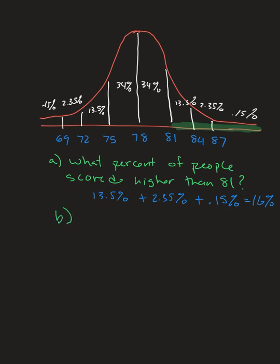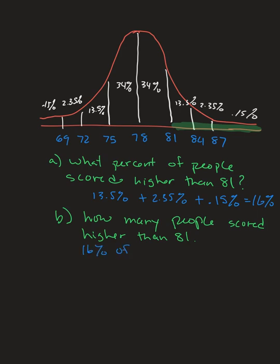Now, how many people scored higher than 81? This is different from asking the percent — here we need to find 16% of 200 people. That means 0.16 × 200 = 32. So 32 people scored higher than 81.